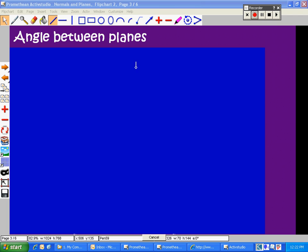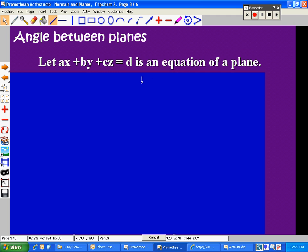This is a lesson on finding the angle between planes. First of all, we're going to use the fact that let ax plus by plus cz equal d be an equation of a plane.